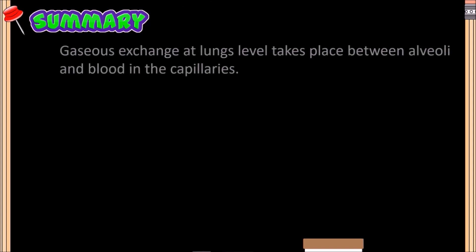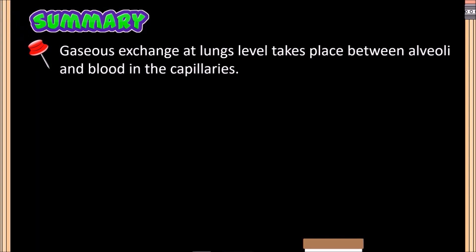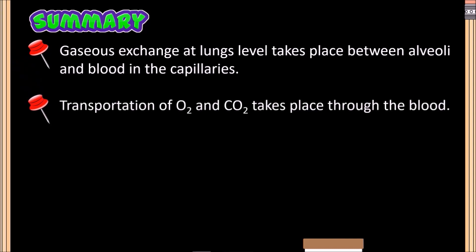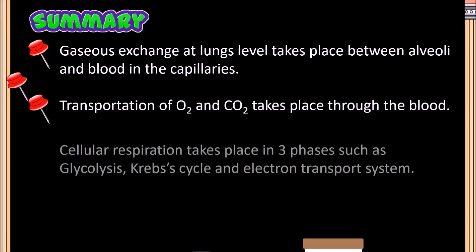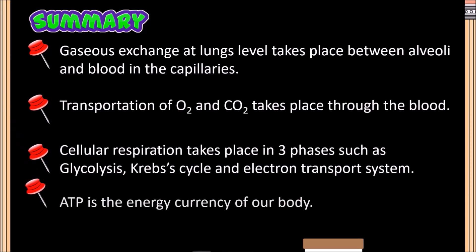Summary. With this video, we have learnt the following concepts: gaseous exchange at lungs level takes place between alveoli and blood in the blood capillaries; transportation of oxygen and carbon dioxide takes place through the blood; cellular respiration takes place in three phases — glycolysis, Krebs cycle, and electron transport system. We have also learnt that ATP is the energy currency of our body.